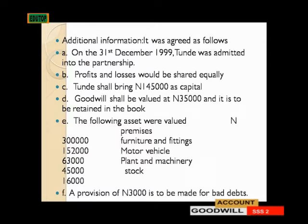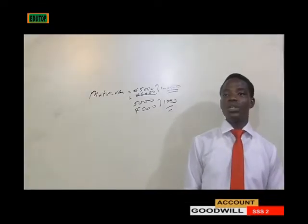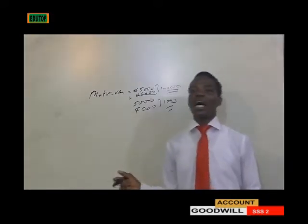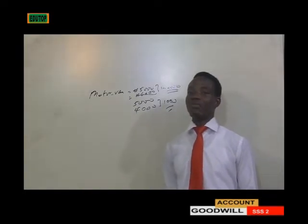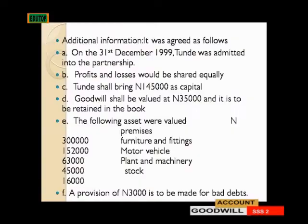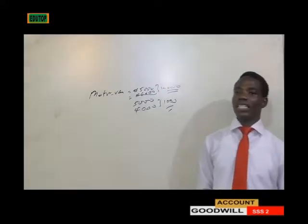It depends on the knowledge of the accountant who will value the goodwill, but they must ensure that it is valued. In this question, goodwill is valued at 35,000 and will be shared by the three partners before the new partner is admitted. The following assets were revalued: premises 300,000; furniture 152,000; motor vehicle 63,000; plant and machinery 45,000; and stocks 16,000. We will determine from the question whether each is an increase or a decrease.